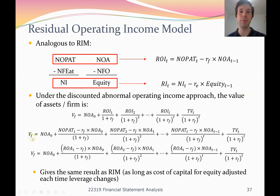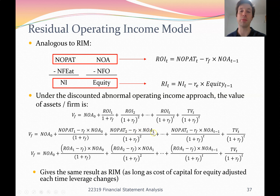The formula for the Residual Operating Income Model states that the value of the firm equals Net Operating Assets at time period zero, plus the Residual Operating Income — NOPAT minus the cost of capital times NOA of the previous year — discounted back for each year, plus a terminal value also discounted back. The way we set up this model is very similar to the Residual Income Model, except we use information from our reformatted financial statements: Operating Profit and Operating Assets.